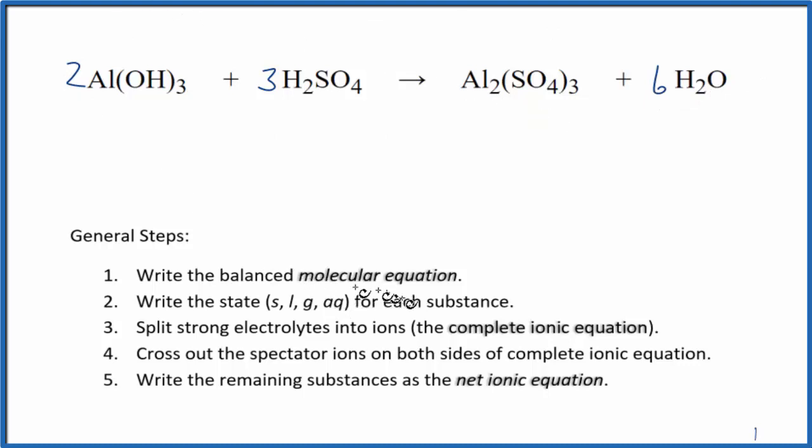Next, we need to write the state for each substance. So aluminum hydroxide. Hydroxides in general are not soluble, with a few exceptions of group 1 metals like sodium hydroxide or potassium hydroxide. So this is not going to be soluble. It's going to be a solid.